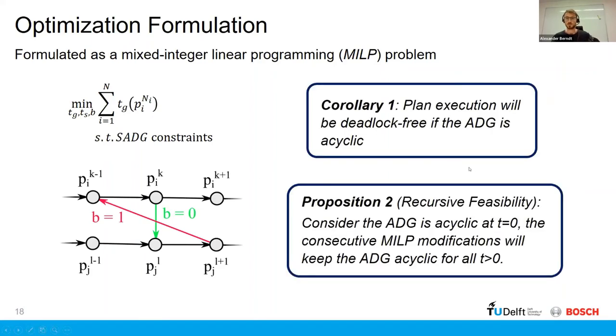And from this, we've got this proposition two, which is a big result of our paper, which is if the initial action dependency graph is acyclic and we apply this control law, this MILP modification, then the action dependency graph will remain acyclic for all positive time.